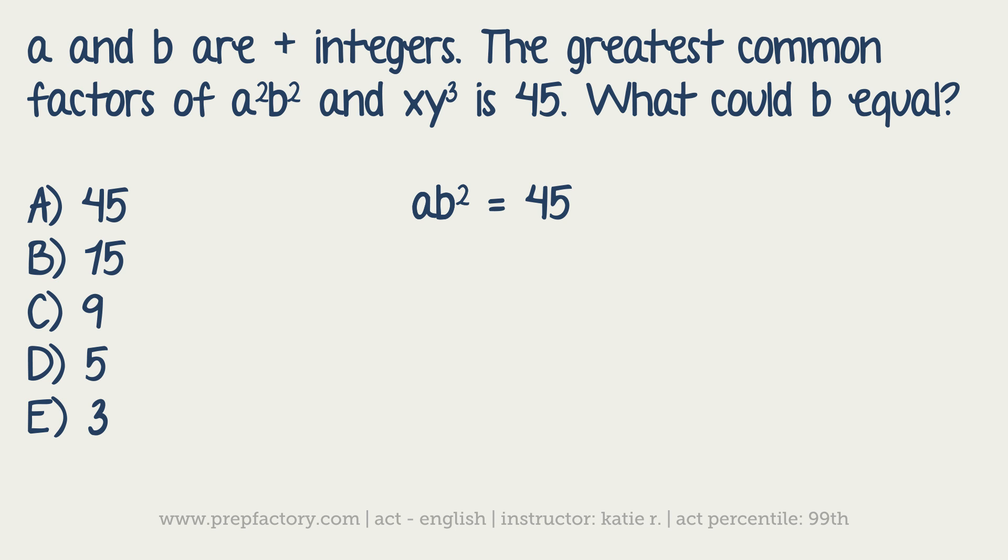What we want to do is be a little sneaky and look at the answer choices. Whatever b is equal to, I need to square it and have that be a factor of 45. I already know things like 45 are not going to work because 45 times 45 is much bigger than 45. And the same principle goes for 15. Because as soon as I have 15 squared, I have 225, and that's not very useful for me either.